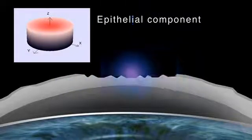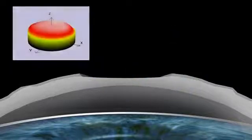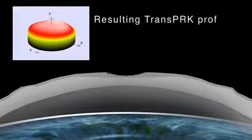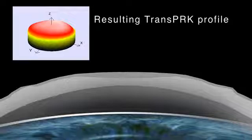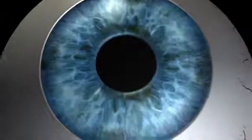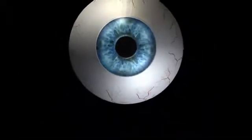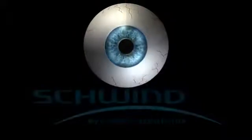TransPRK is a versatile approach. It is useful in all cases where a difficult epithelial flap is expected or when the epithelium covers corneal irregularities of the stromal tissue. Using Amaris TransPRK ablation profiles shortens the overall treatment time, minimizes the risk of corneal dehydration, and speeds up the healing process.